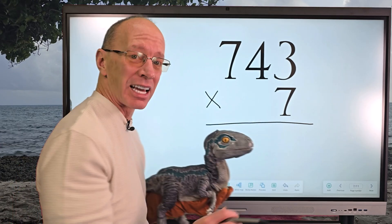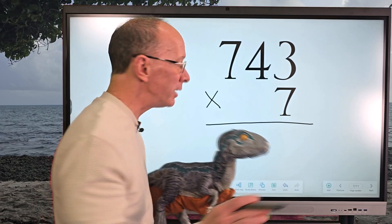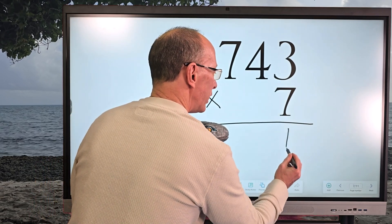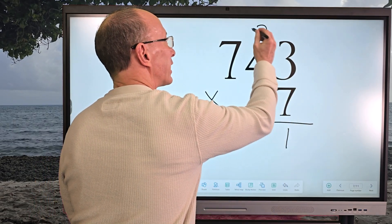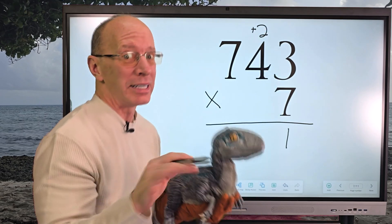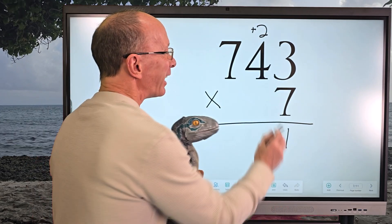So now I'm going to take seven times four, which equals twenty-eight. And twenty-eight plus two equals... twenty-eight, twenty-nine, thirty. Yeah! So I put the zero right here, and I put the three up here.